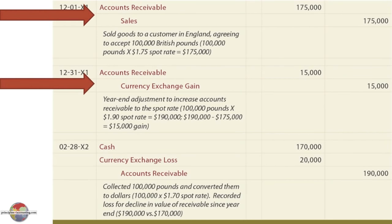At the balance sheet date of December 31, we adjust the accounts receivable — increasing it to $190,000 by adding $15,000 and recognizing a currency exchange gain, reflecting the incremental increase in the U.S. dollar equivalent of the receivable as the spot rate rose to $1.90. Then it goes the other way in the next year. When we collect the receivable on February 28, the 100,000 British pounds bring only $1.70 each, or $170,000, although our receivable was carried at $190,000, resulting in a $20,000 debit or loss to balance the entry.